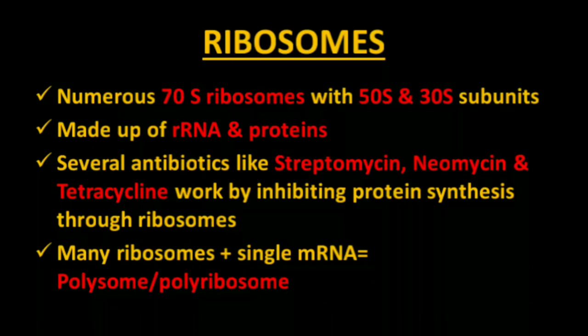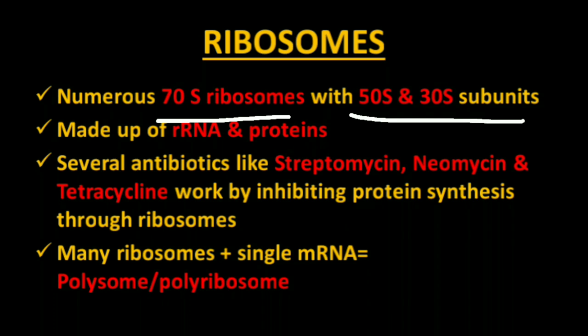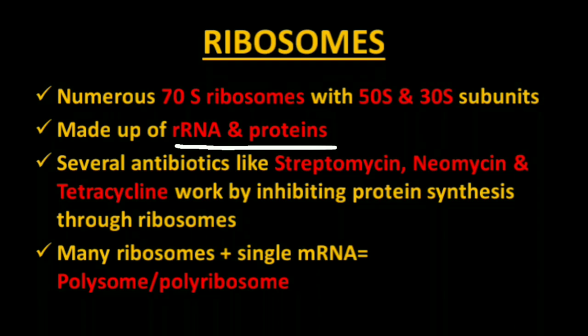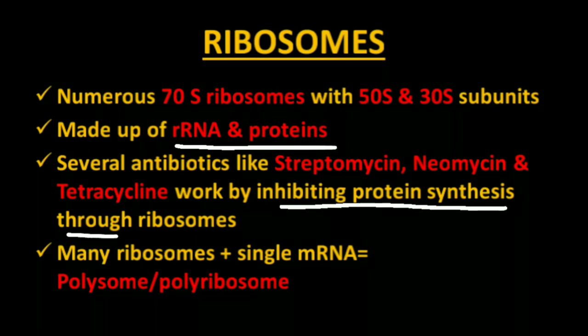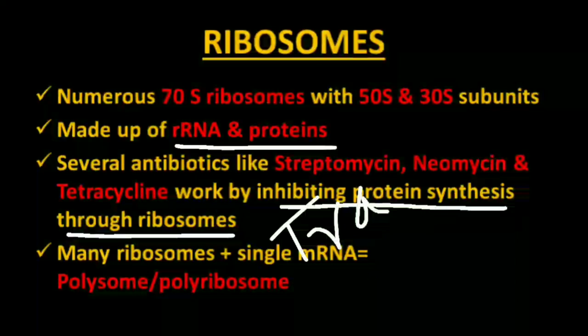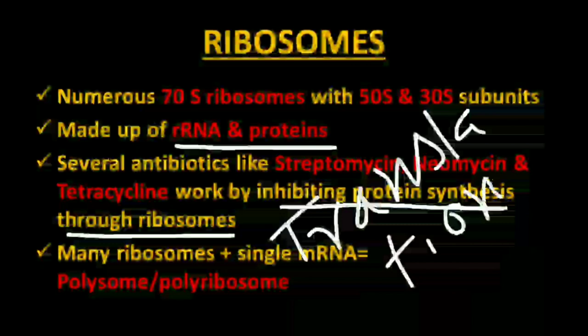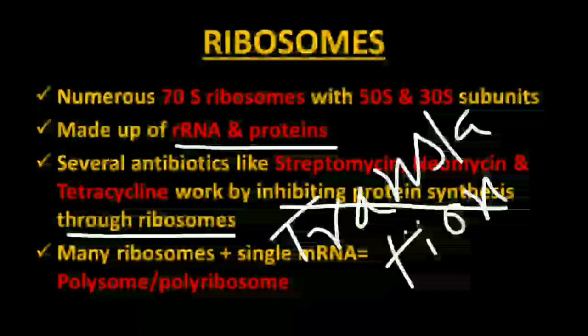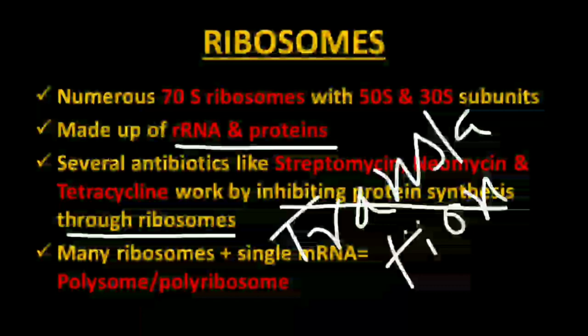Ribosomes are 70S with subunits 50S and 30S. They are made up of rRNA and protein. Several antibiotics like streptomycin, neomycin, and tetracycline work by inhibiting protein synthesis through ribosomes — the process known as translation. Many ribosomes associated with a single mRNA is known as a polysome — very important for NEET exam, asked multiple times.